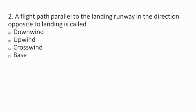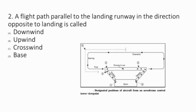Question 2: A flight path parallel to the landing runway in the direction opposite to landing is called the downwind leg. The downwind leg is parallel to the landing runway in the direction opposite to landing. The default circuit pattern is left hand. This question is based on the designated positions of aircraft from an aerodrome control tower viewpoint.